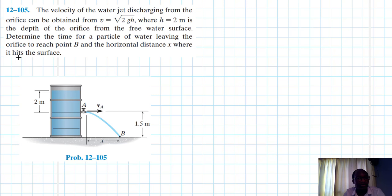Determine the time for the particle of water leaving the orifice to reach point B and the horizontal distance x where it hits the surface. This problem is coming from the Engineering Mechanics Dynamics 14th edition by R.C. Hibbeler.